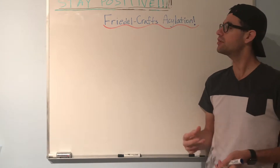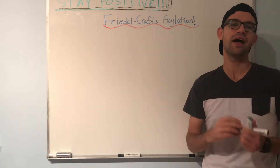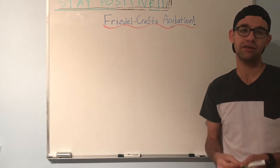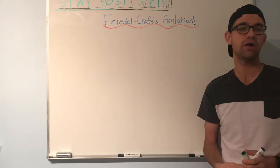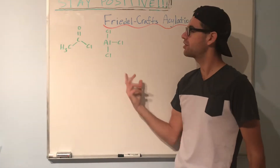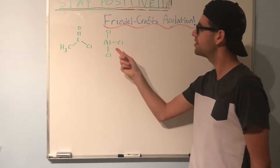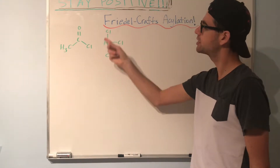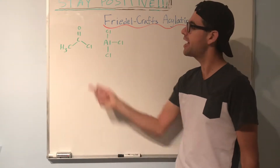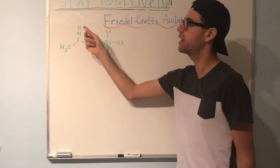The first step, like in the other EAS reactions, will involve making a really strong electrophile. So let's start right there. Here we have our two ingredients for making a strong electrophile: we have aluminum chloride, which will serve as our catalyst, and we have an acetyl chloride molecule right here.